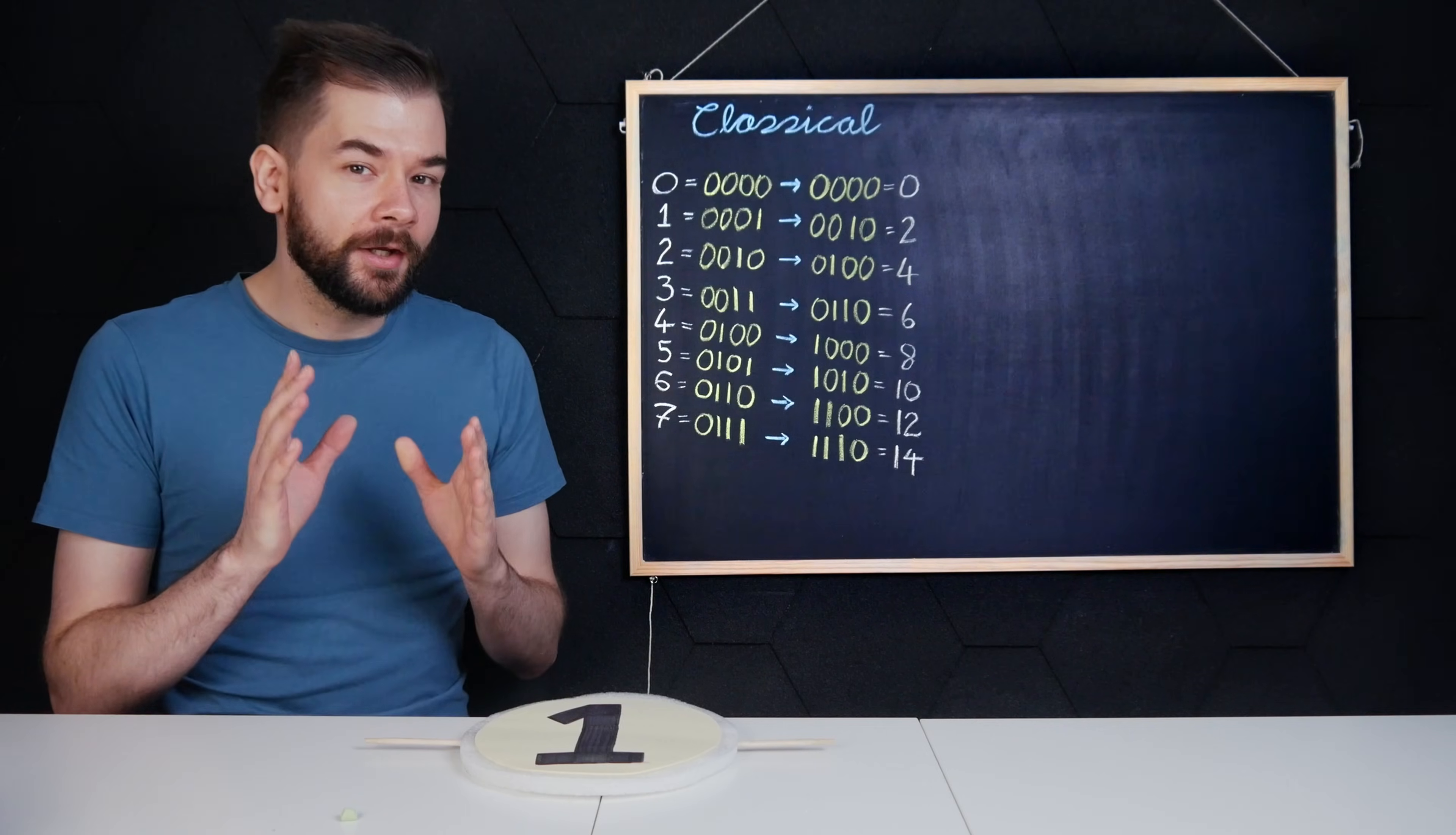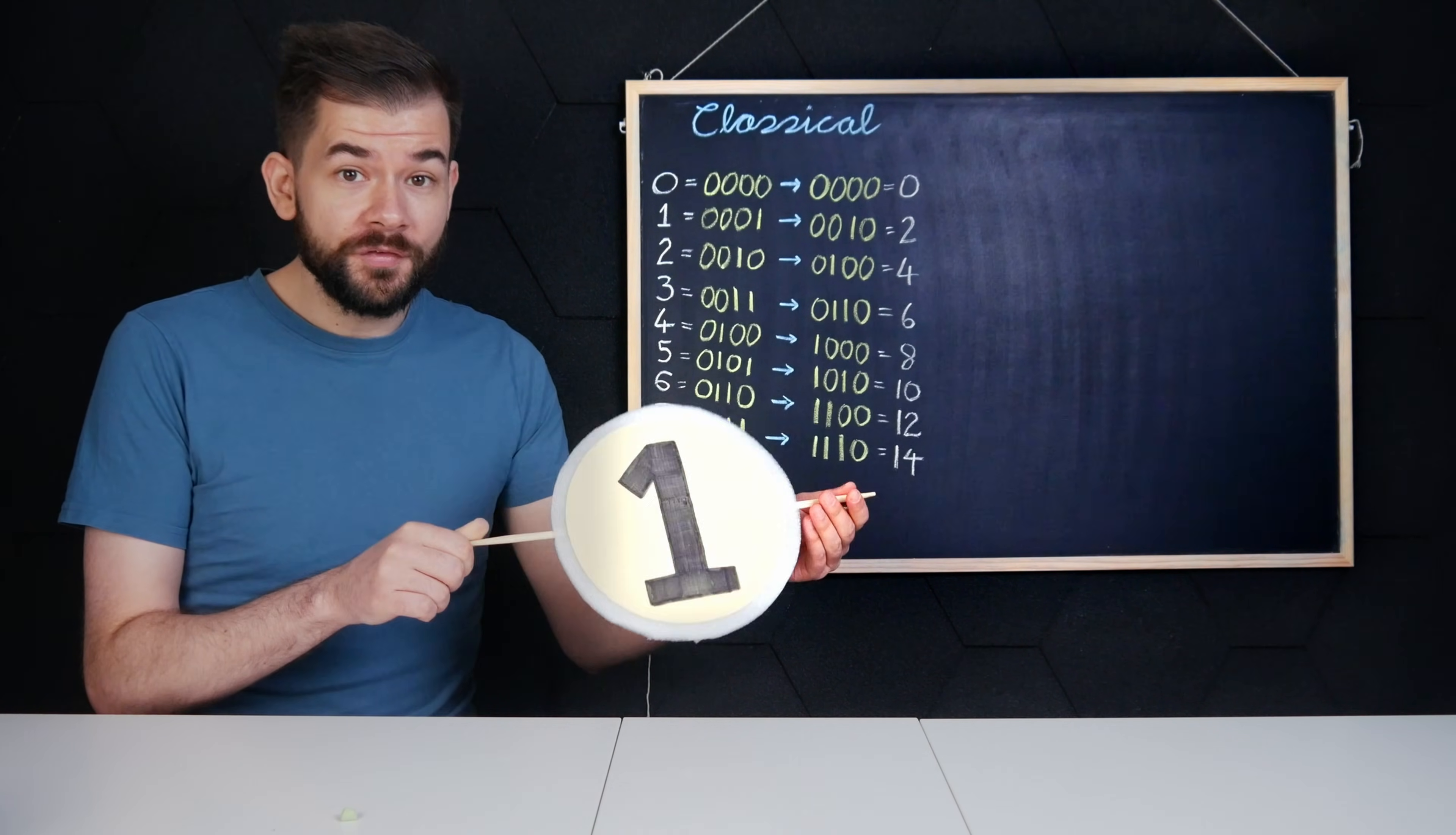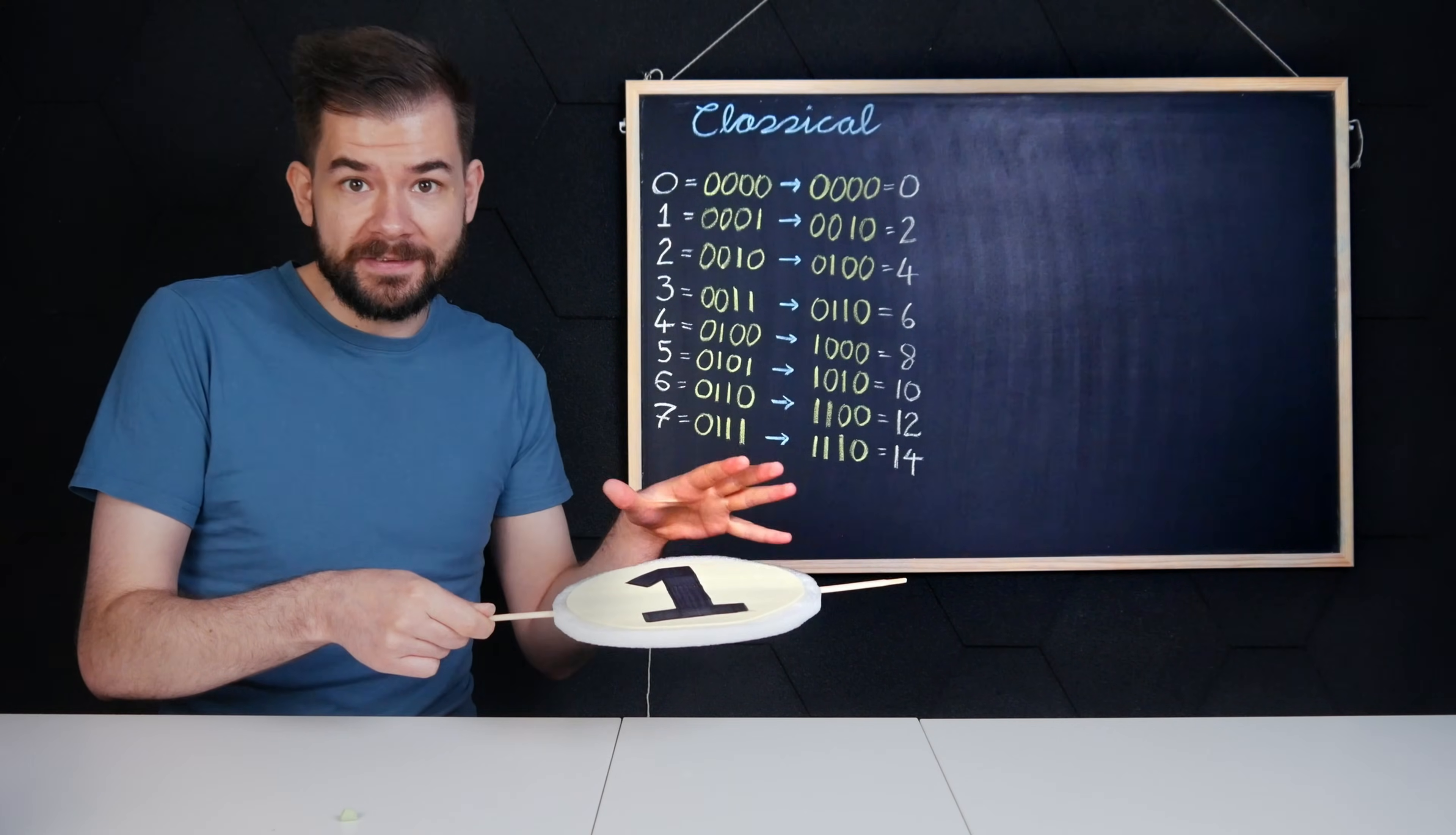In contrast, a quantum computer is built from qubits. A qubit also has a value of zero or one, except its value isn't determined until we measure it. You can think of a classical bit as a coin on heads or on tails. It is what it is.